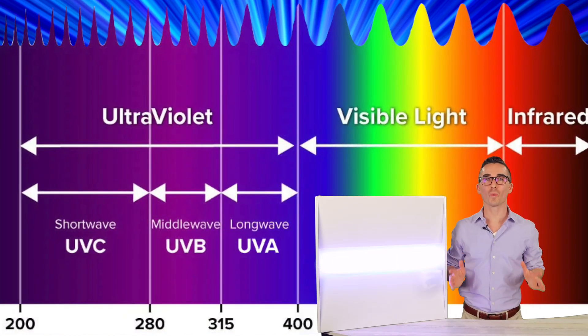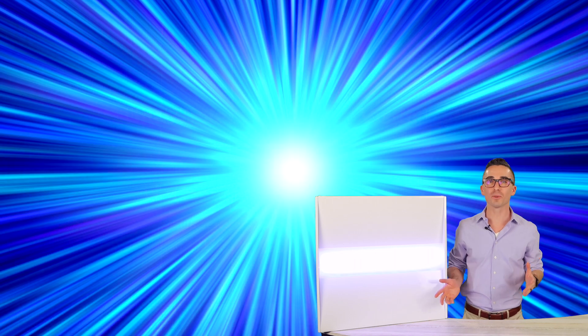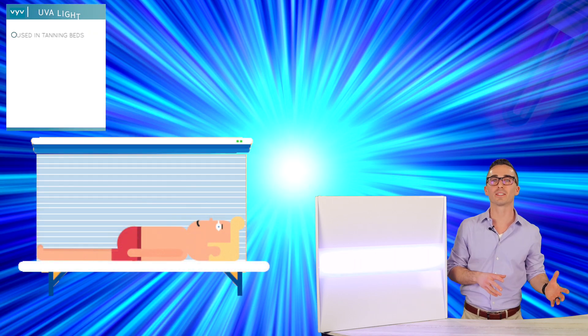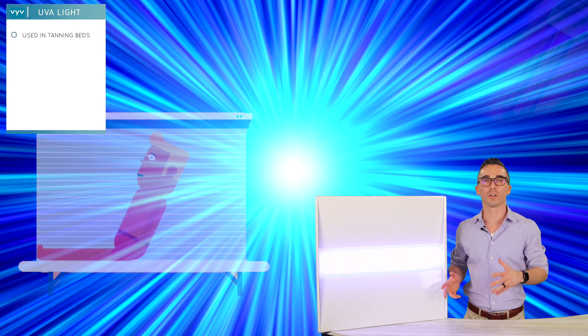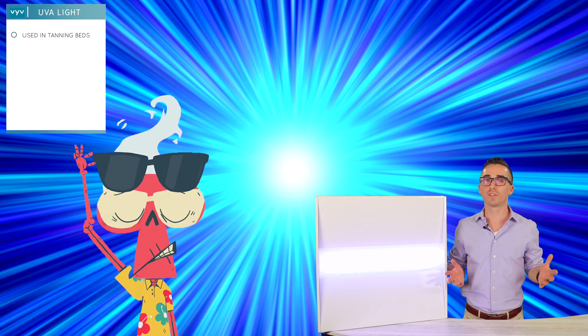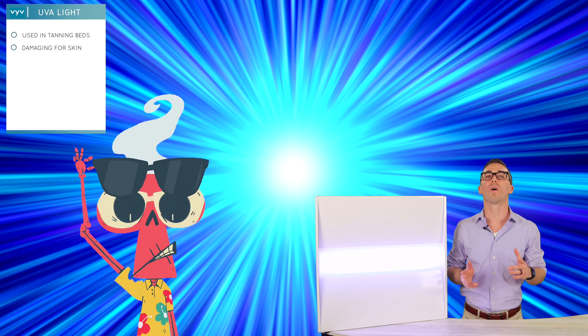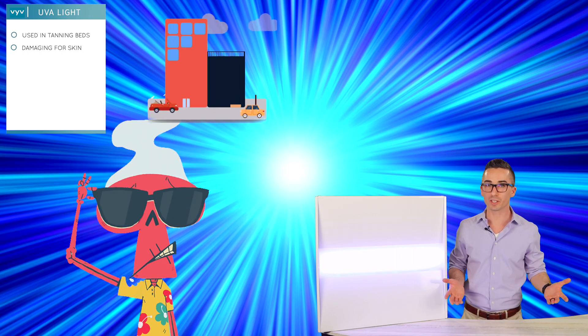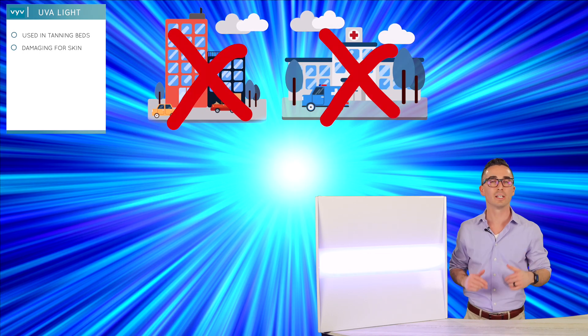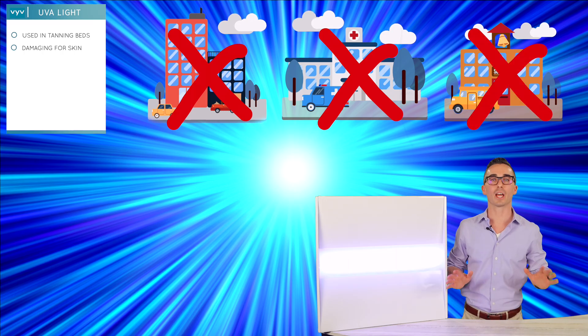UV-A is long wave UV measured at 315 to 400 nanometers. Examples of the most common applications of UV-A technology include tanning beds and black light lamps. So if you're choosing to use a tanning bed that's cool, live your life, but you don't want to be under that all day. Which is why we don't use it in any office, healthcare, schools, any of those applications at all.